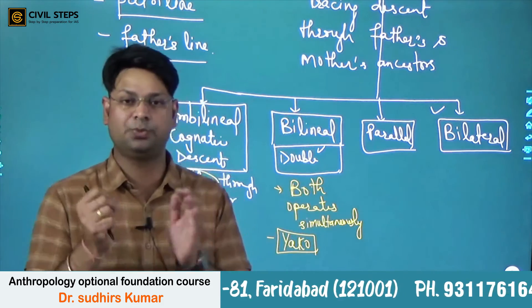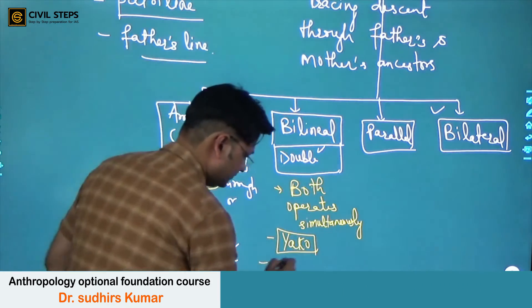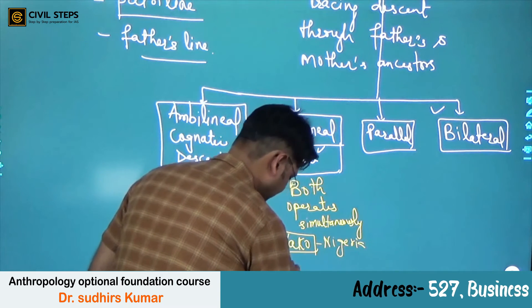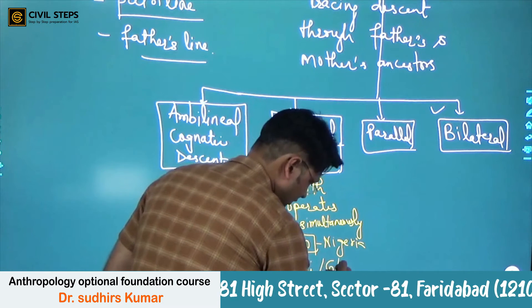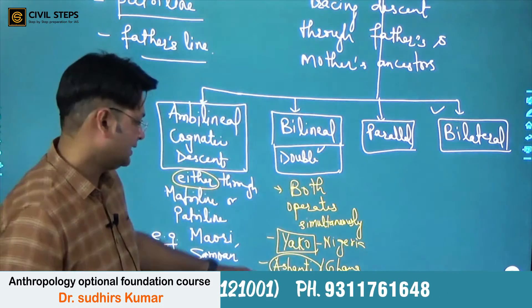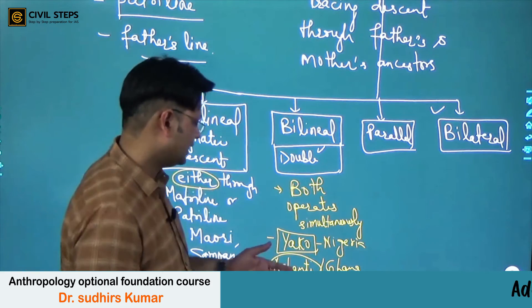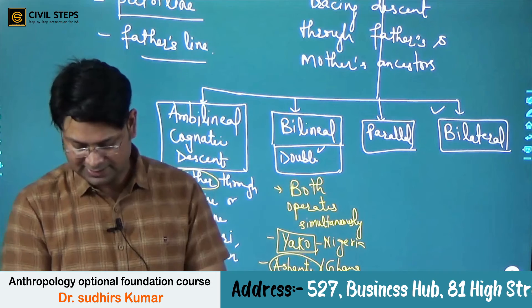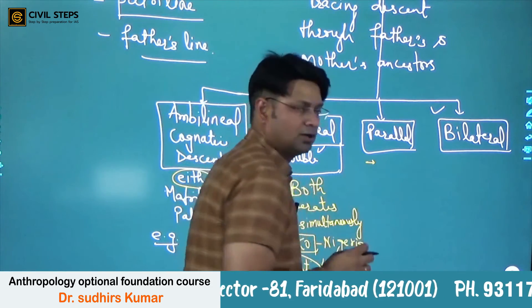The Yako of Nigeria is a patrilineal society where we see double descent or bilineal descent — two lines operating concurrently, the father's line and the mother's line. Similarly, the Ashanti of Ghana is another example. The Ashanti is a matrilineal society where immovable property passes through the mother's line and movable things pass through the father's line.